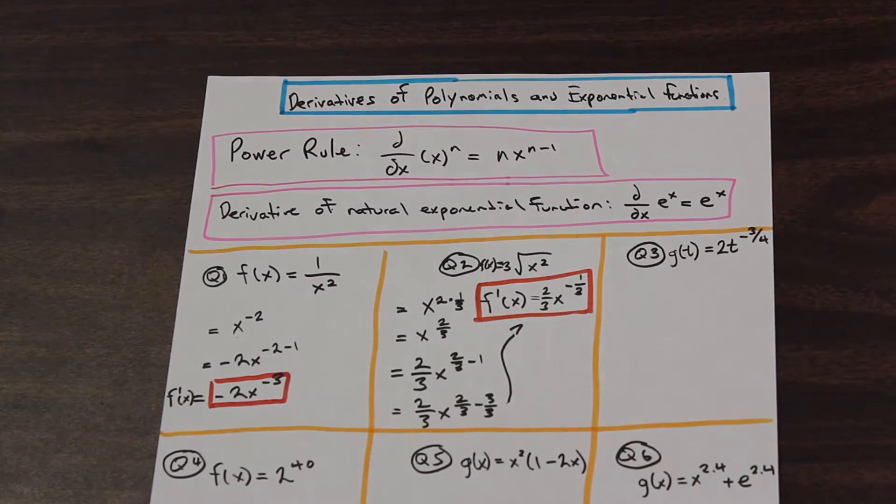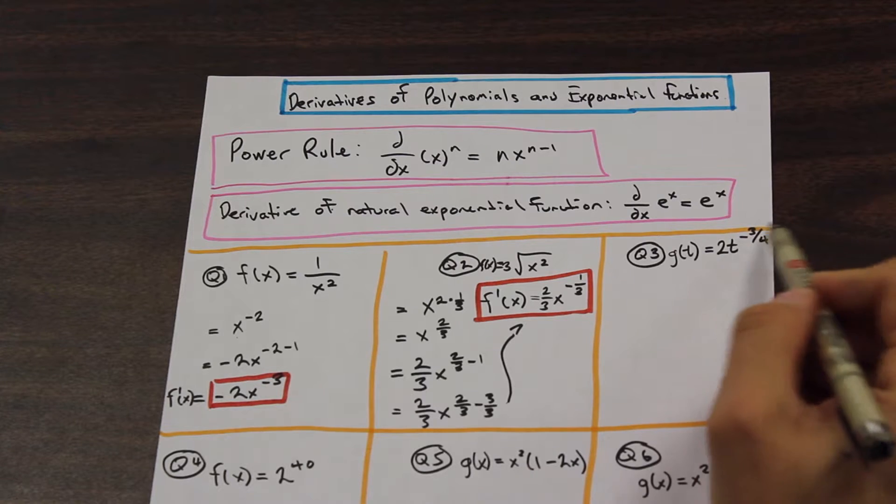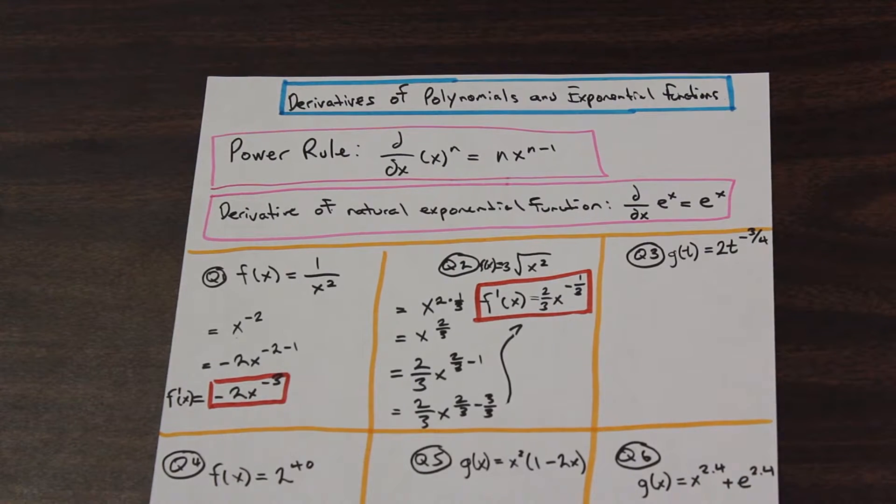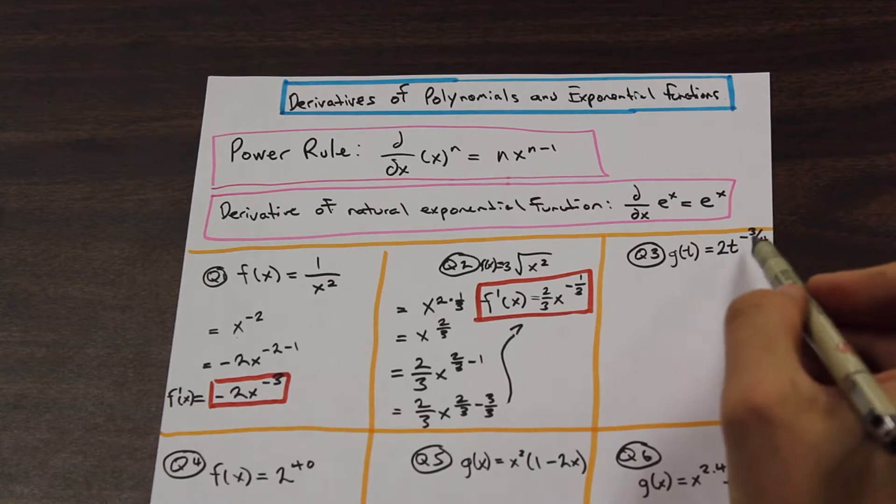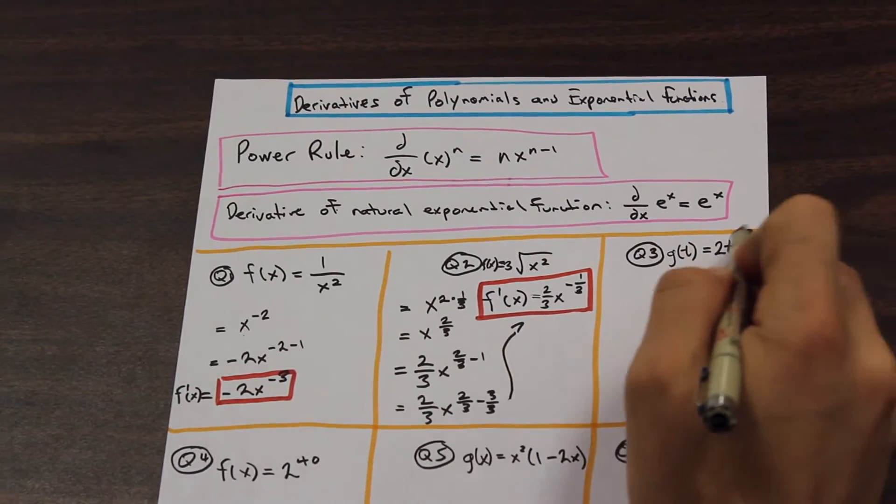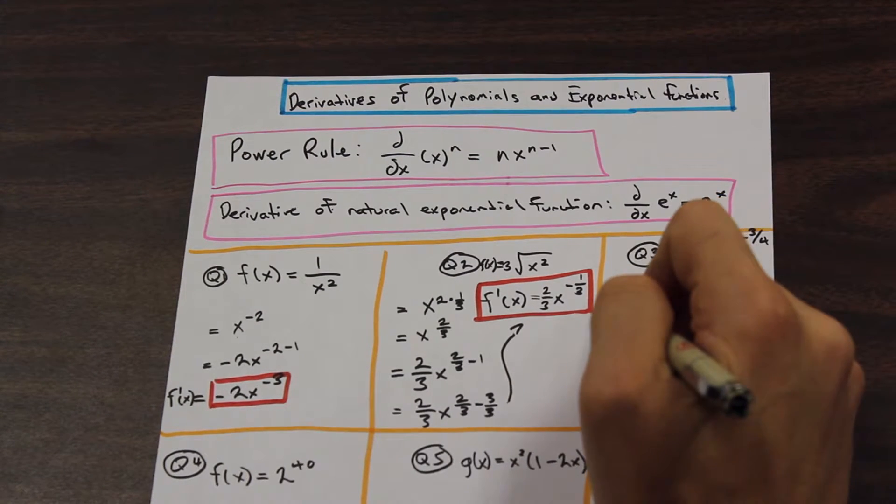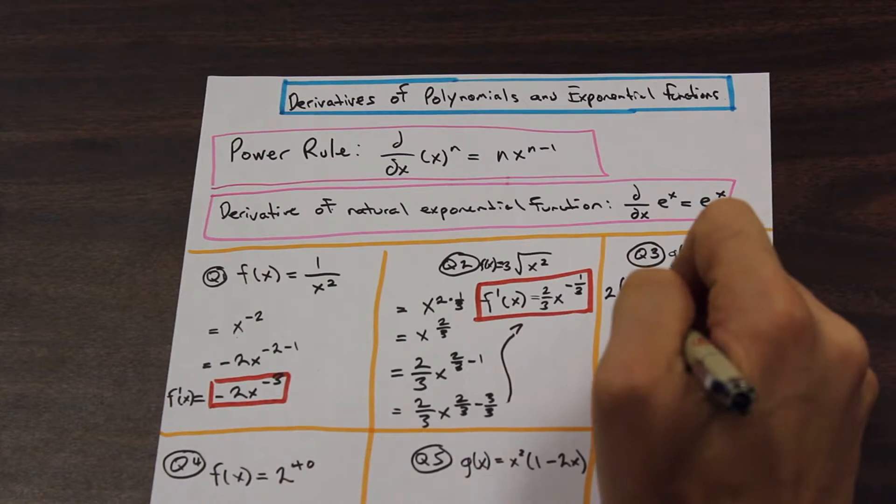Let's move ahead and go to the third question. So we have g of t is equal to 2 times t to the power of negative 3 over 4. And let's just keep on solving exactly the way we've been doing these. So 2, we're going to bring this n here down, and we're going to multiply that by the constant in the front. So we have 2 times negative 3 over 4 t,